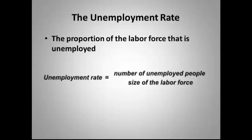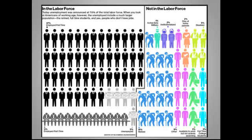What's important to understand about unemployment is that it is not simply a measure of how many people aren't working. Technically, it is a measure of the number of people in the labor force who want to work but cannot find work. There are many people not in the labor force: active duty military, full-time students, people in prison or other institutions, stay-at-home parents, the disabled, the retired, and — very importantly — people who are available to work but are no longer or have never been actively searching for work.